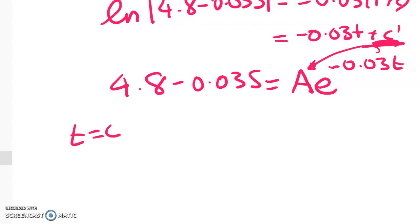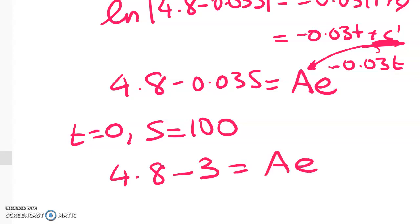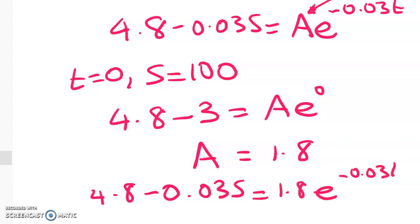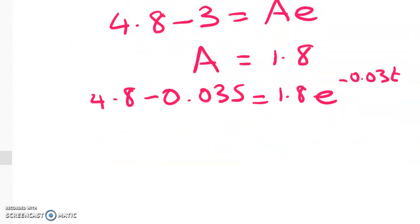So what do I know? Well, at t equals 0, s is equal to 100. So that gives me the following equation. I've got 4.8 minus 0.03S is equal to... 4.8 minus 3 is equal to 1.8 e to the negative 0.03T. Now you probably could substitute in there and do it some smart way on your calculator. But we're in a scholarship exam so we're going to show what s is equal to.